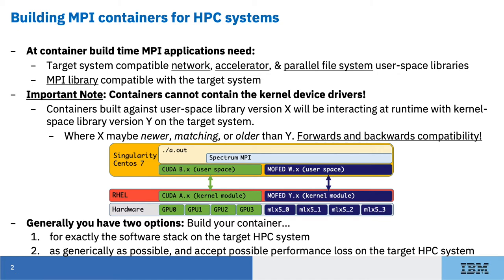When building a container with MPI for HPC systems, folks generally do one of two things. First, build the container for exactly the software stack on the target HPC system. This allows you to extract maximum performance, but you'll need to create a new image for each target system and refresh your container image when the system software updates. Alternatively, you can build a container as generically as possible, targeting the broadest set of system requirements. This may come at a performance loss but provides more portability between machines and possibly more longevity on a single machine.